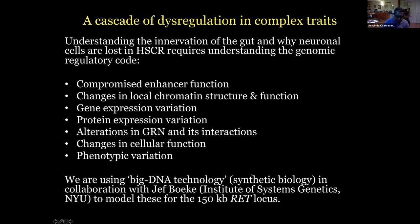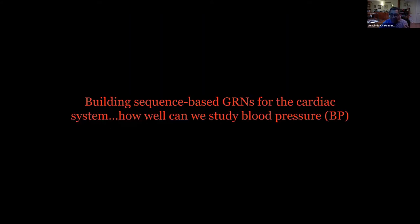The way we are now doing this is collaborating with my colleague at NYU, Jeff Booker, to use big DNA technology. We're going to model a 150 kb RET locus where we can put in the enhancers we want, the human coding sequence, with sequence variants we want to follow through all of these aspects to find out what it takes to really lose these cells. Hirschsprung's is fine, but we are all interested in how far we can push this paradigm.